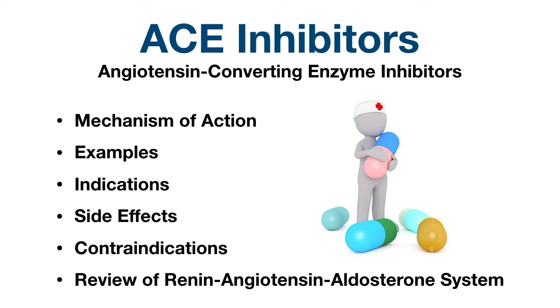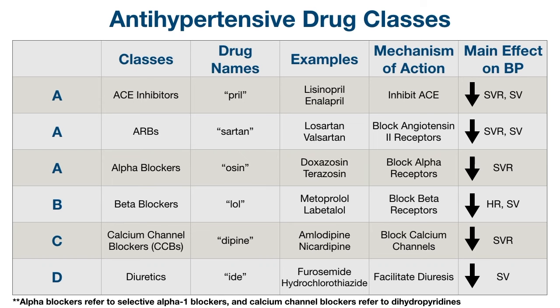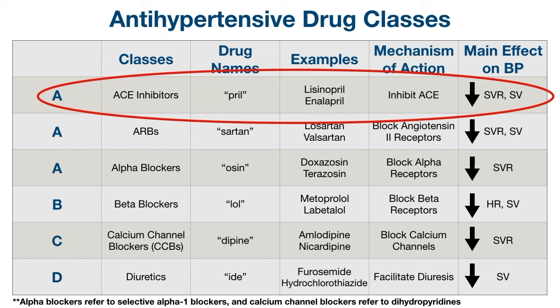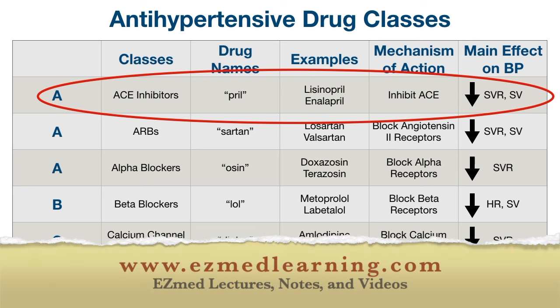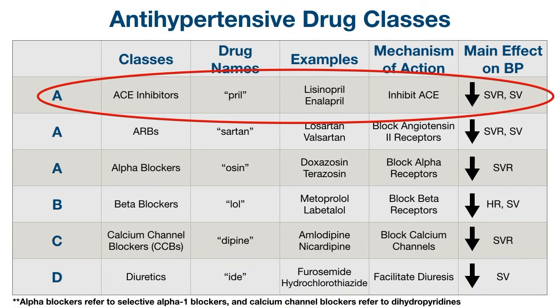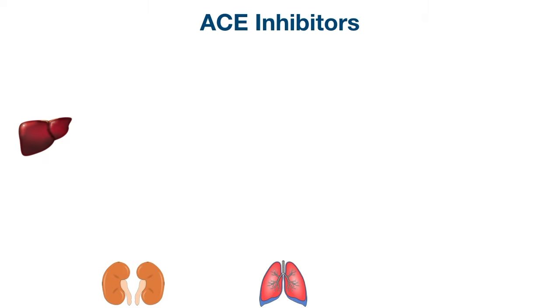We're also going to do a quick review of the renin-angiotensin-aldosterone system, as ACE inhibitors block the normal physiology of this system. In the previous EasyMed video we went through a chart to go over the main antihypertensive classes. You can find it on the EasyMed website, easymedlearning.com, linked below in the description, along with the YouTube video that walks you through it.